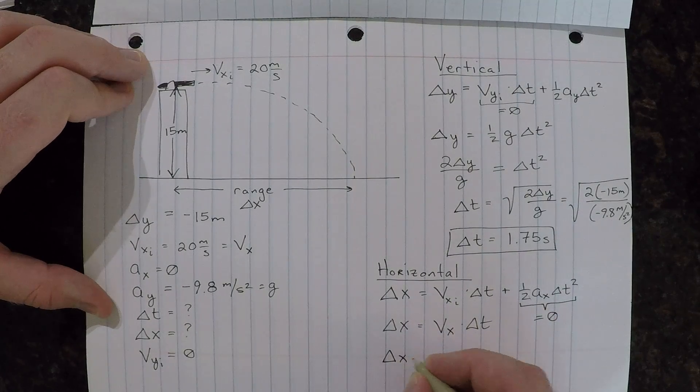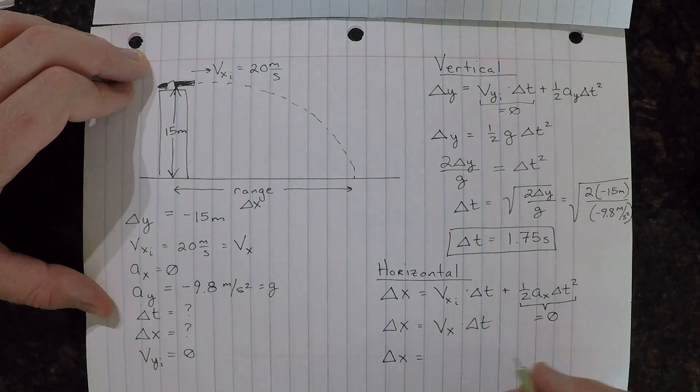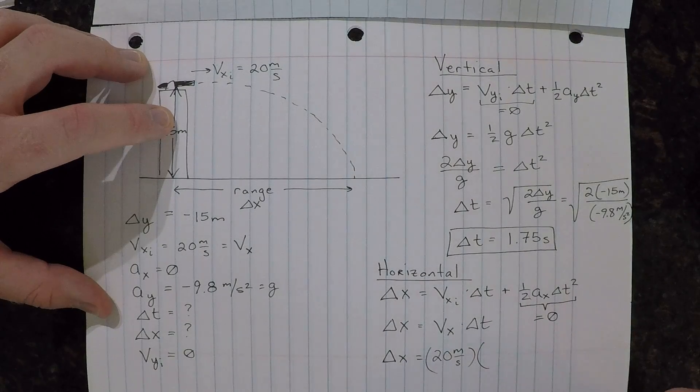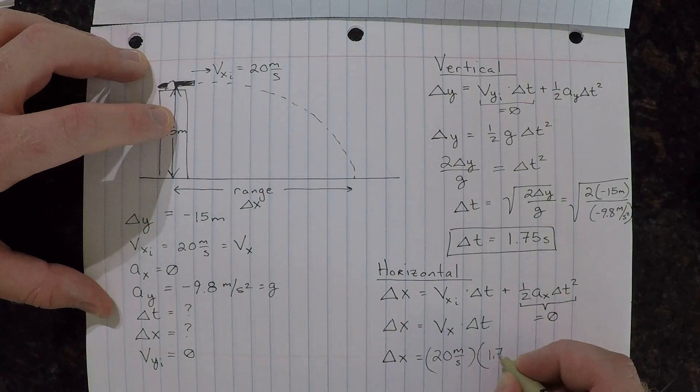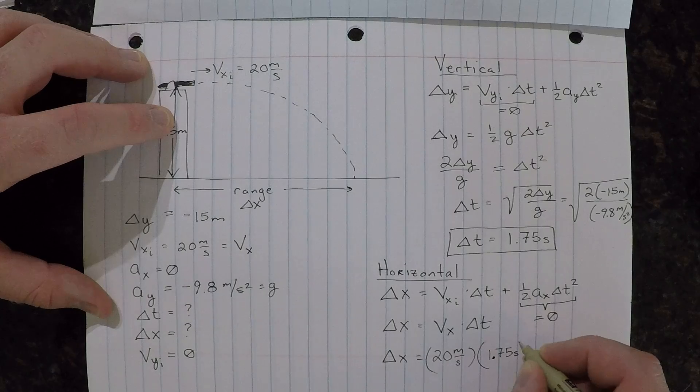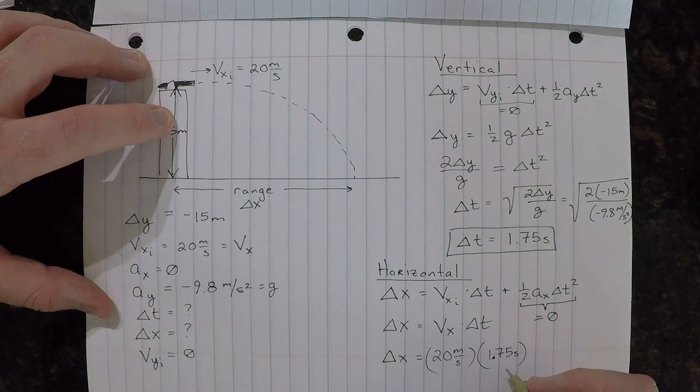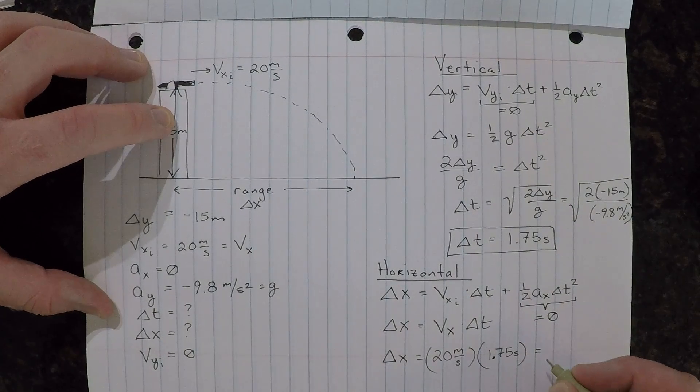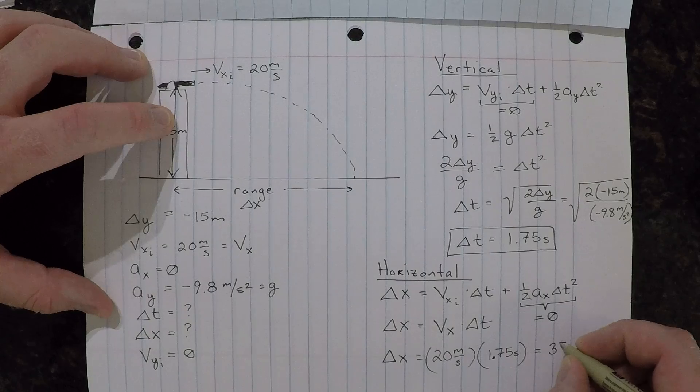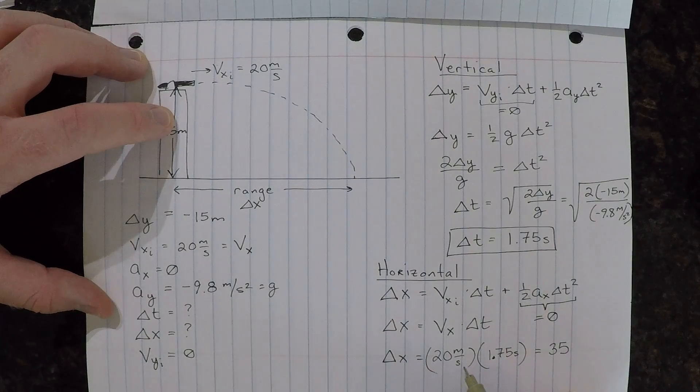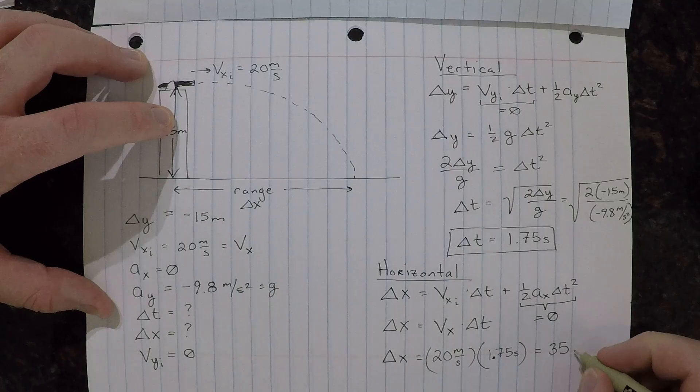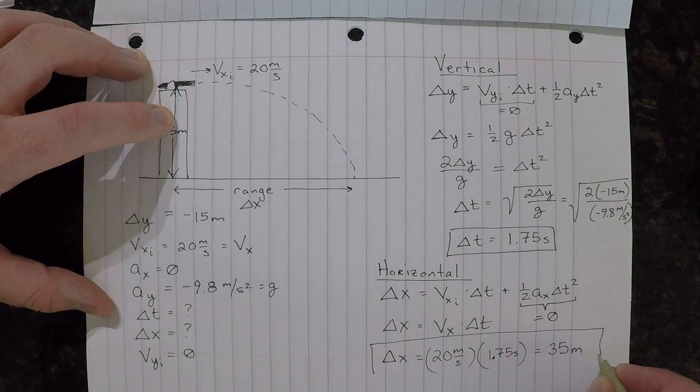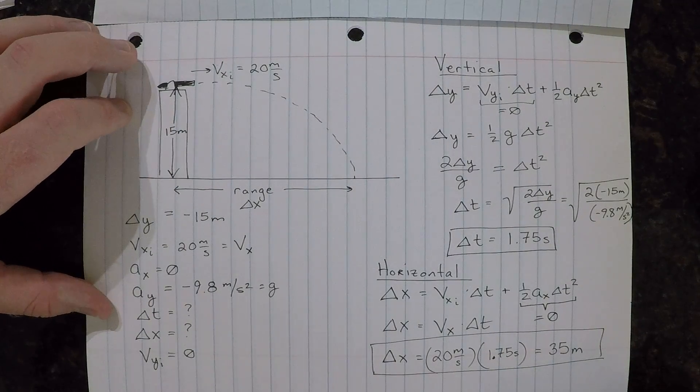What this turns out to be is delta x is equal to, let's put our numbers in, 20 meters per second times 1.75 seconds. Well, that's going to be 75 percent larger than 20. So 20 times 1.75 turns out to be 35. Our units, meters per second times seconds, cancel out. We're left with meters. And that is our horizontal range for this projectile motion exercise.